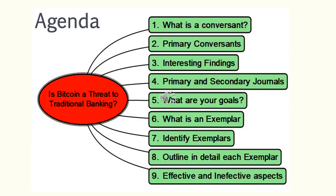What is the purpose of this presentation? My topic for my essay is: Is Bitcoin a Threat to Traditional Banking? Before I start writing, I want to discuss what a conversant is, identify my primary conversant, identify interesting findings about my conversant, and note that I have identified primary and secondary journals. I am going to state what my goals are, what my objectives are, and what I intend to accomplish in this paper.